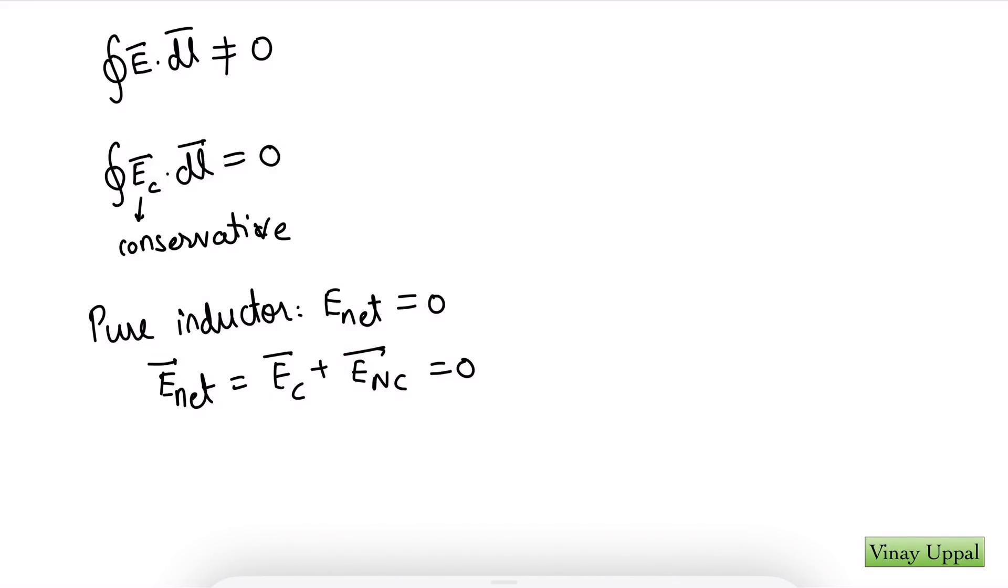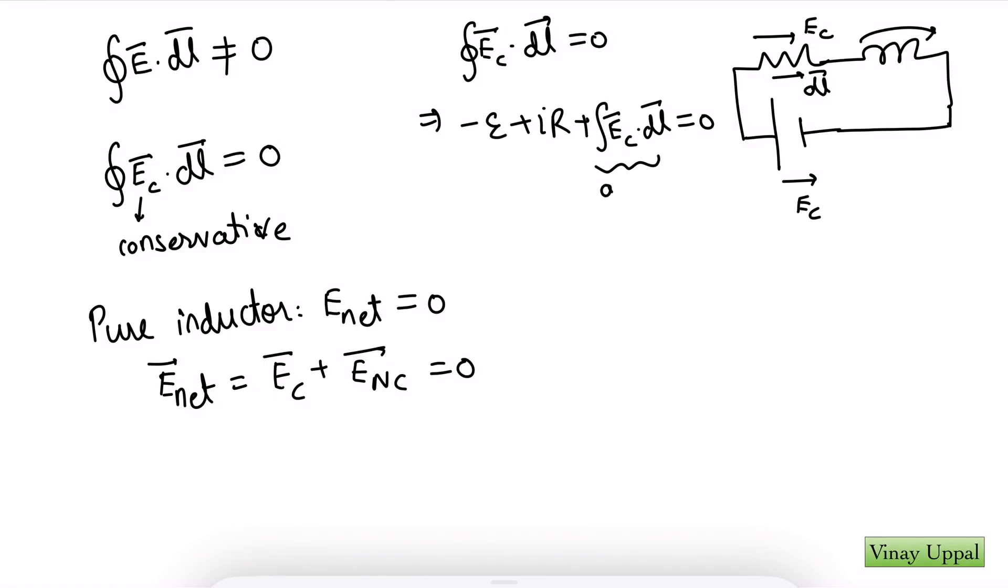Now let's write integral E conservative dot dl over the closed loop is zero. And let's see what we get. So once again, I go across the battery. I have a conservative field here. I'm going across from the lower terminal to the higher terminal. So the integral will be minus EMF. Then I have a conservative electric field in the direction of the current along the resistor, which will give me plus IR. And then when I go across the inductor, let me just write that as plus integral E_C dot dl. And this should be zero. This is across the inductor.